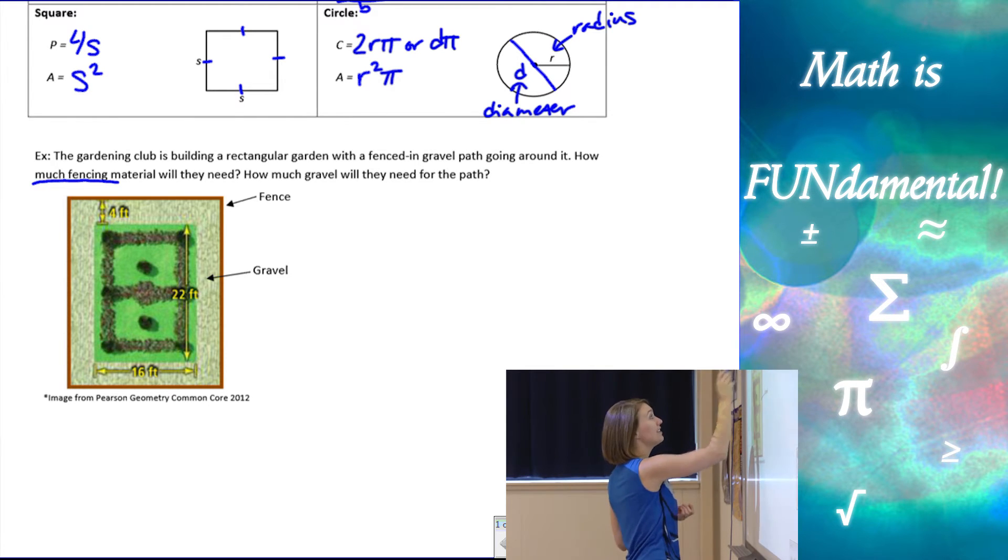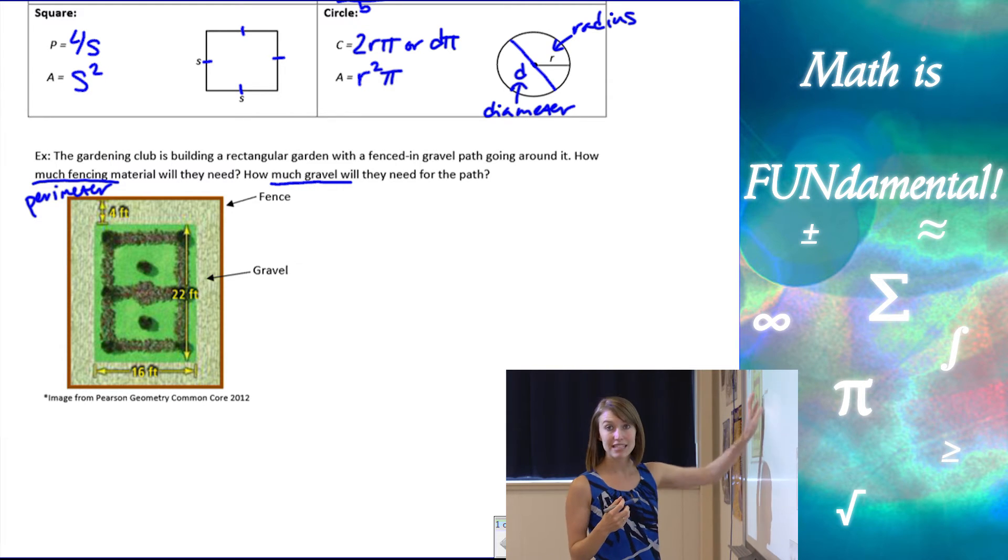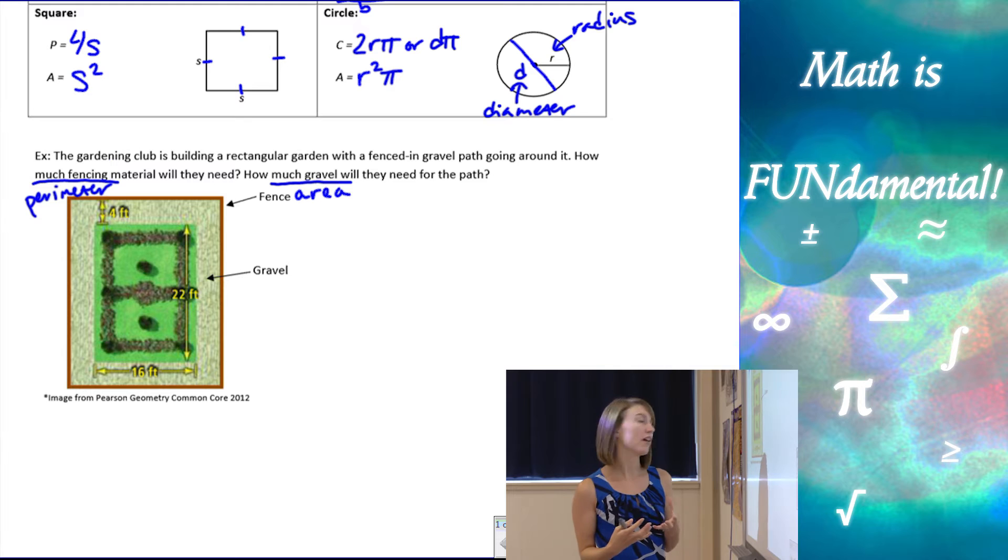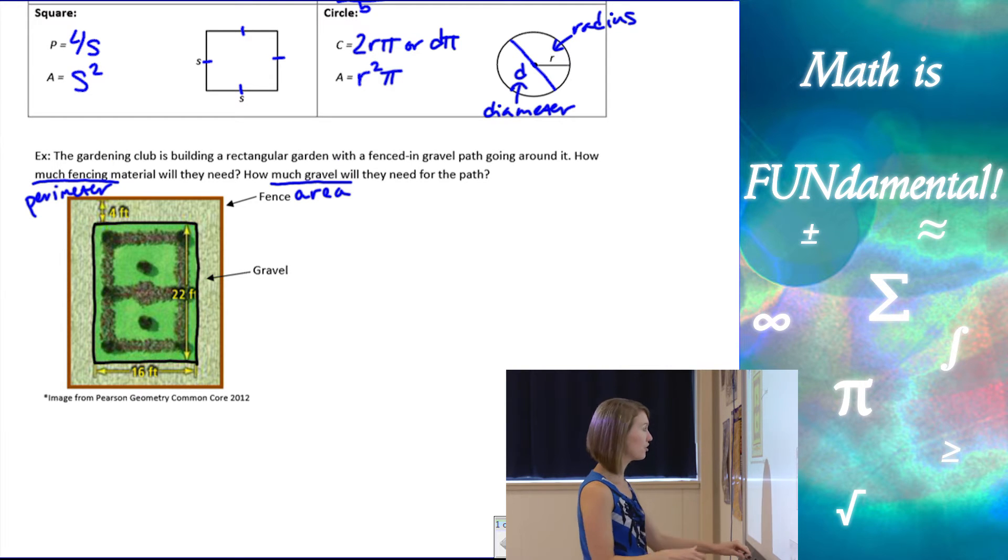When we want how much fencing, the amount of fencing only goes around the outside of our rectangle. That's what we call the perimeter. And then when they say how much gravel, we're using gravel to fill that space in between the garden and the fence. When it fills up like that, and it's not just the outside part, that's area. So here we want to find the area of that gravel part. So let's separate these. I'm going to separate the garden from the gravel because we're going to want just the gravel when we do the area.